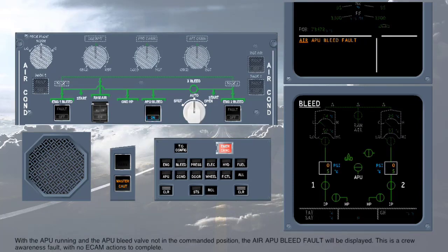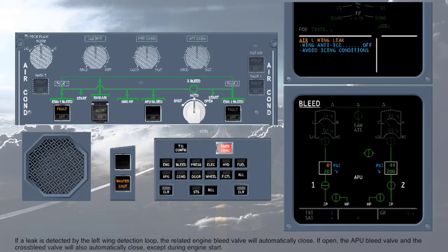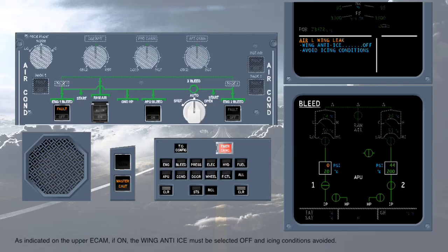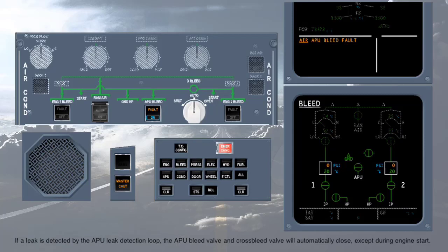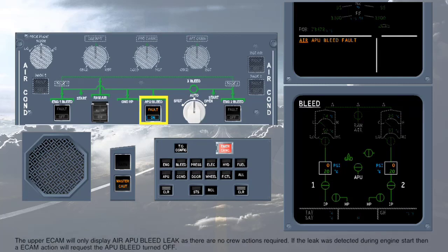With the APU running and the APU bleed valve not in the commanded position, the APU bleed fault will be displayed. This is a crew awareness fault with no ECAM actions to complete. If a leak is detected by the left wing detection loop, the related engine bleed valve will automatically close. If open, the APU bleed valve and cross-bleed valve will also automatically close, except during engine start. If on, the wing anti-ice must be selected off and icing conditions avoided. If a leak is detected by the APU leak detection loop, the APU bleed valve and cross-bleed valve will automatically close, except during engine start. The upper ECAM will only display air APU bleed leak as there are no crew actions required.